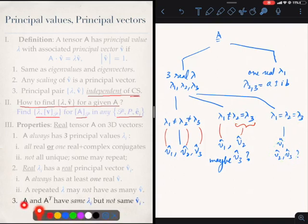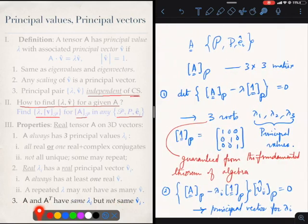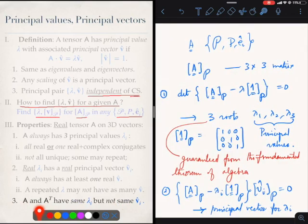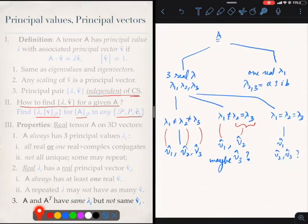Finally, both A and its transpose have the same principal values, but they do not have the same associated principal vector. The same principal value is easy to see. We are finding the principal values by solving for this determinant, and this determinant does not change if you choose A transpose. Now let me show you some examples.